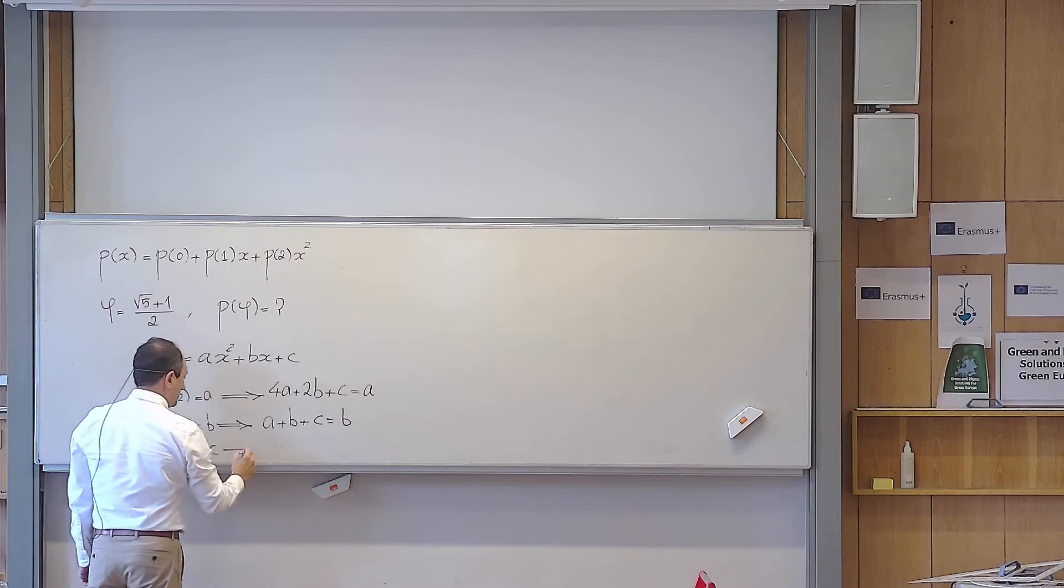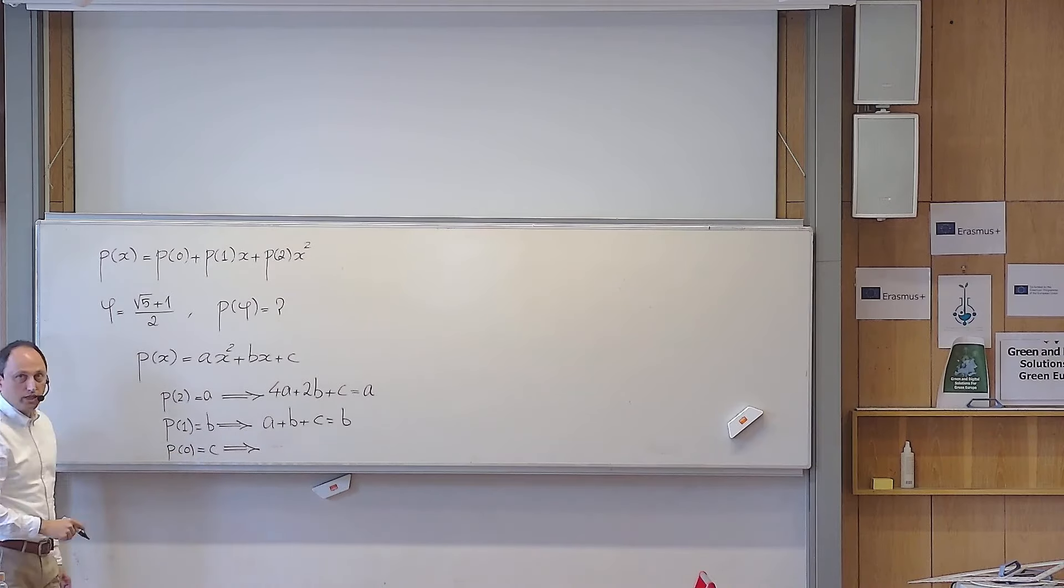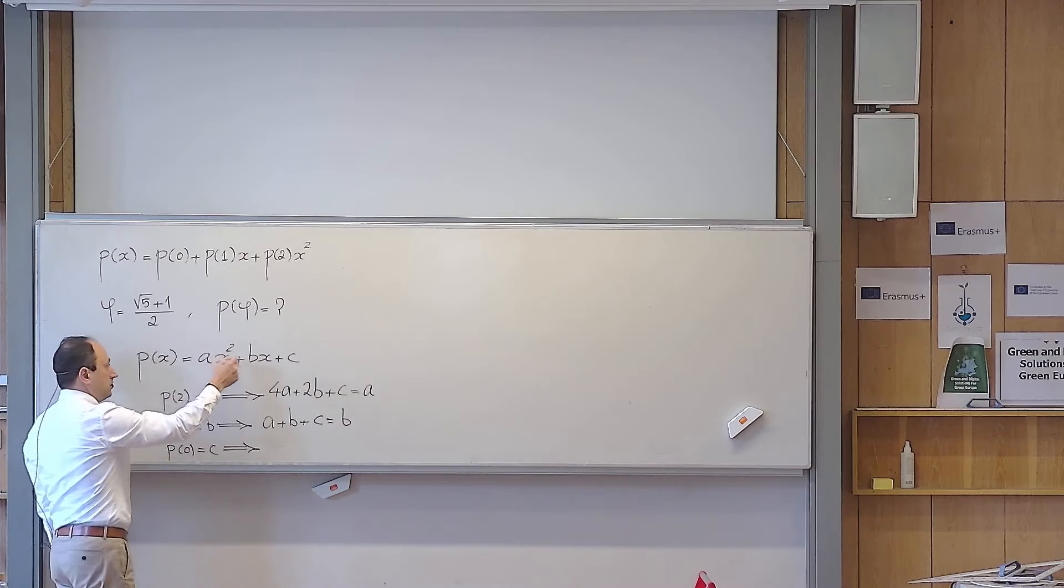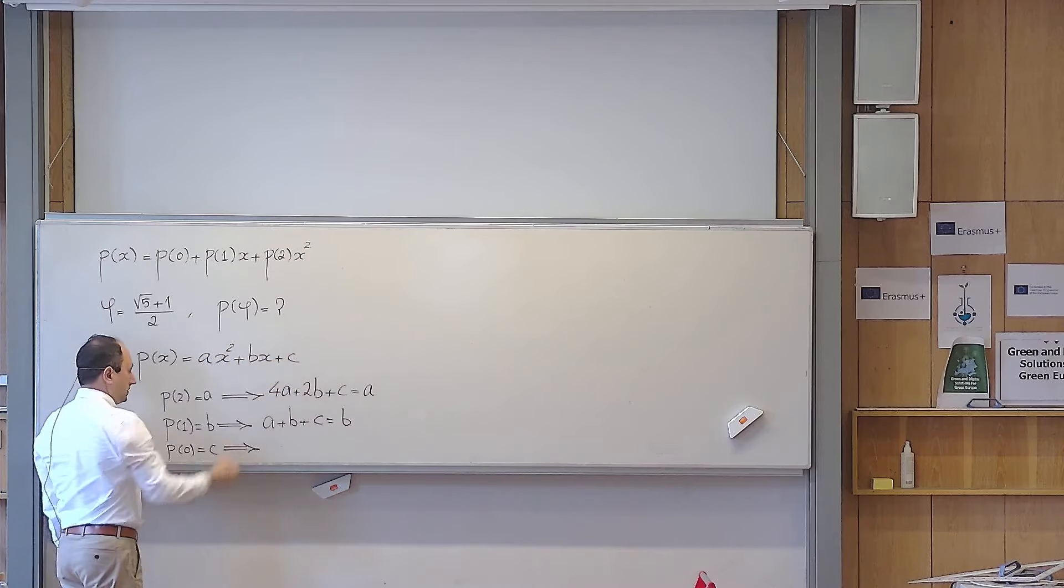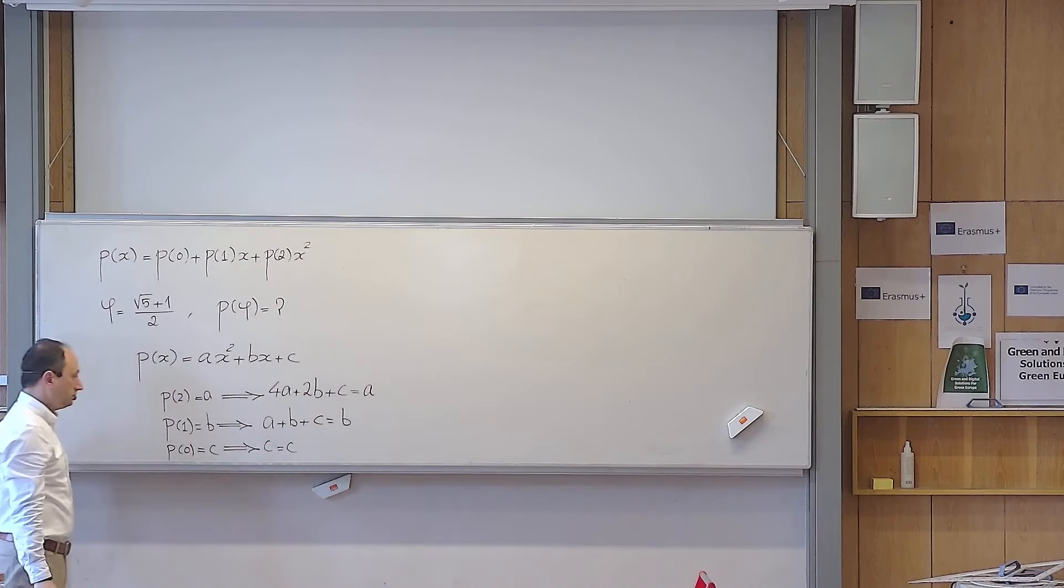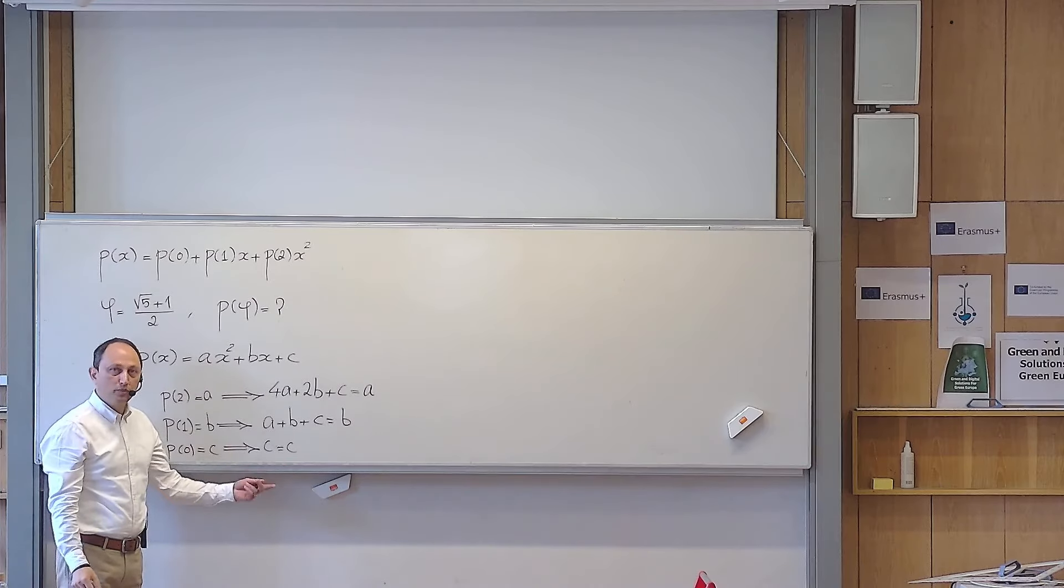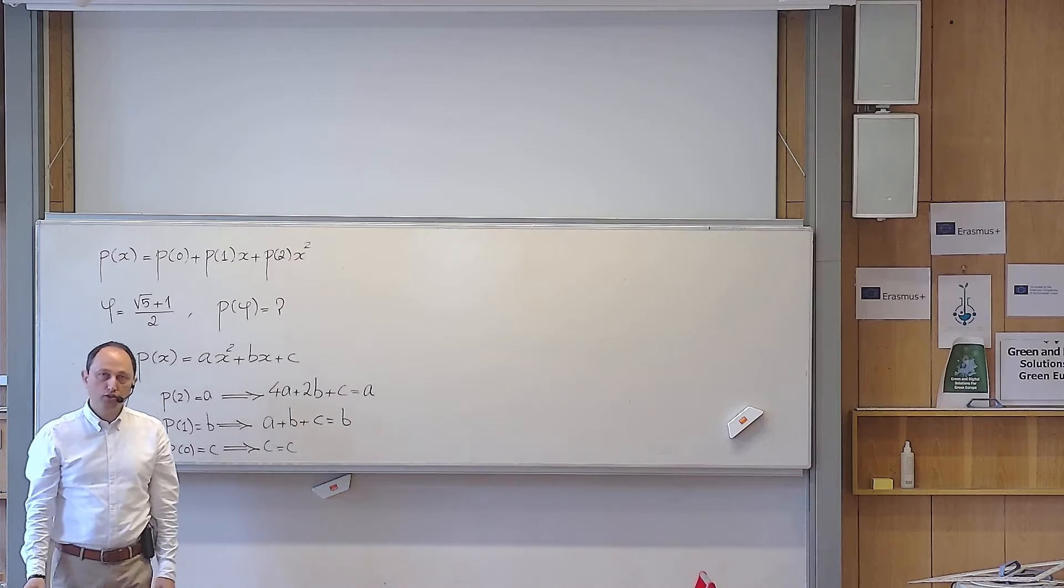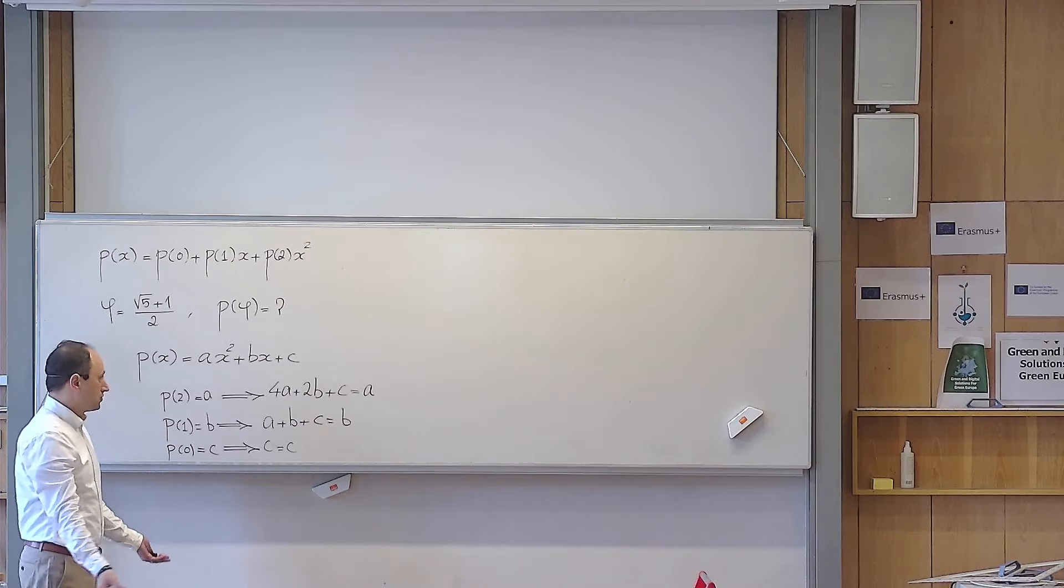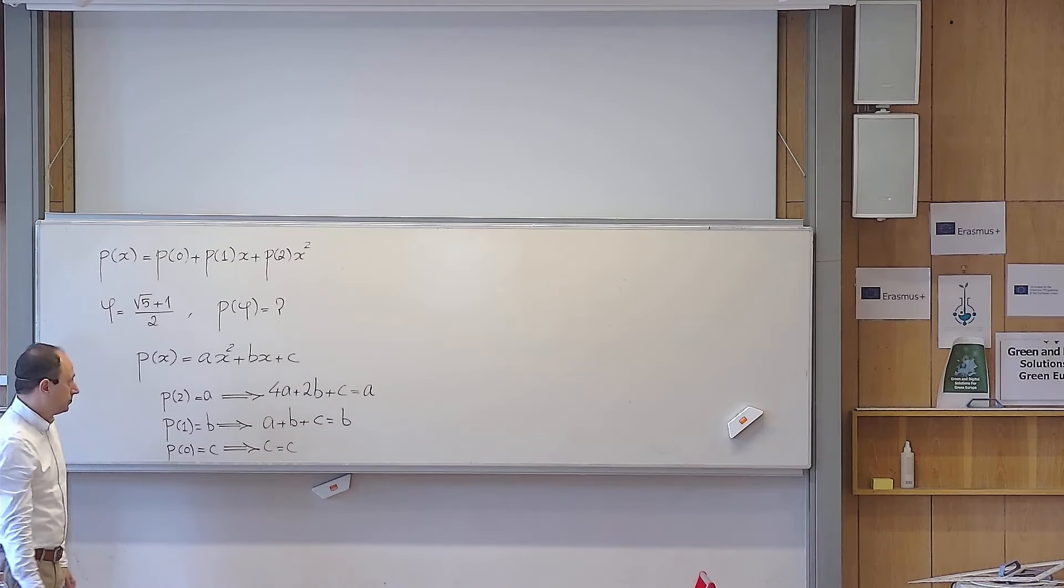And similarly here, but even simpler. Because this means if I replace x with 0, this will be gone, this will be gone, c will be left, c is supposed to be equal to c. So that is more or less a redundant piece of information. Because for every choice of c, c of course is equal to c.